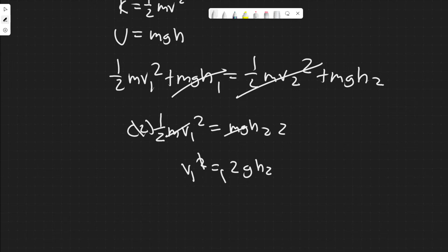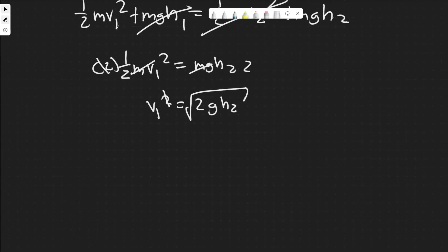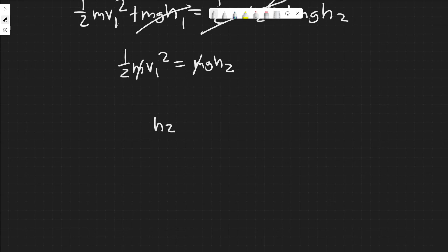So we'll have v1 squared equals 2gh2. And then if you square root both sides, you would get the initial velocity by itself - or sorry, we're not solving for v1. That's my mistake. We're solving for h2. So if we want to solve for that, what we would do is obviously cancel the masses still. We would just divide by the g. So h2 is equal to one half v1 squared divided by g.